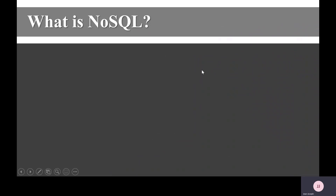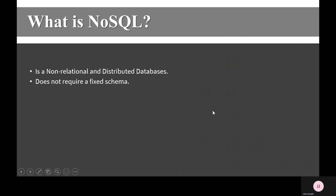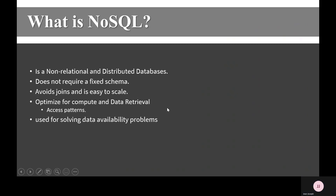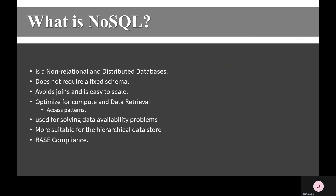What is NoSQL? NoSQL is a non-relational and distributed database. It does not require a fixed schema. It allows you to avoid joins and is easy to scale. It's optimized for compute and data retrieval, so you have to come up with a good access pattern. It's used for solving data availability problems and is most suitable for higher volume data stores. It is BASE compliance, which we'll go over later.